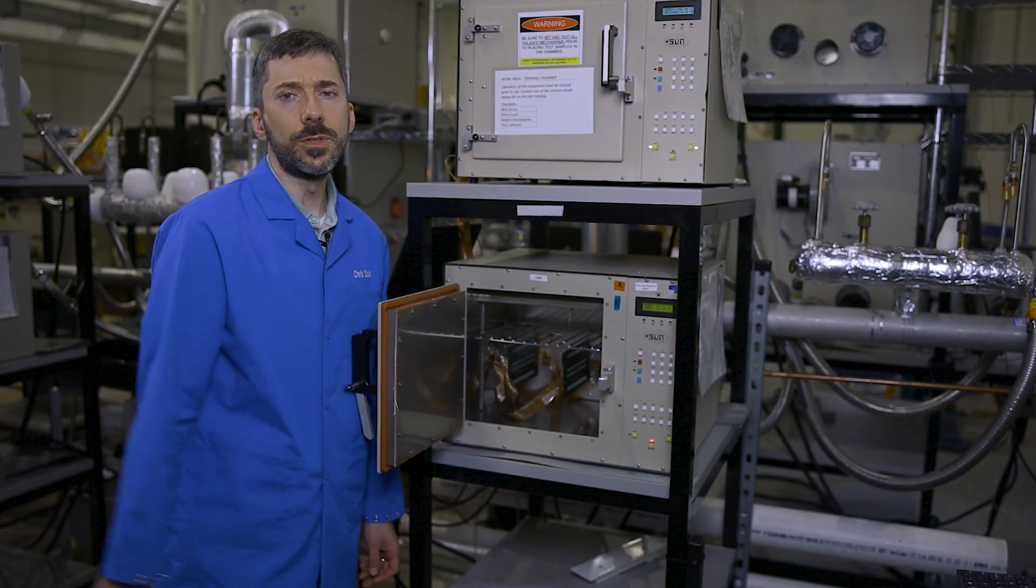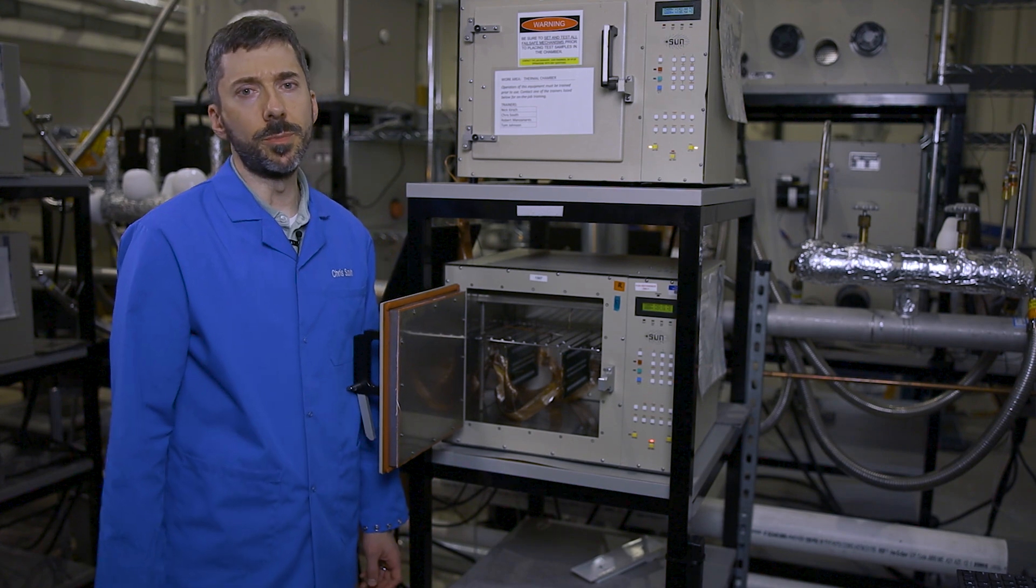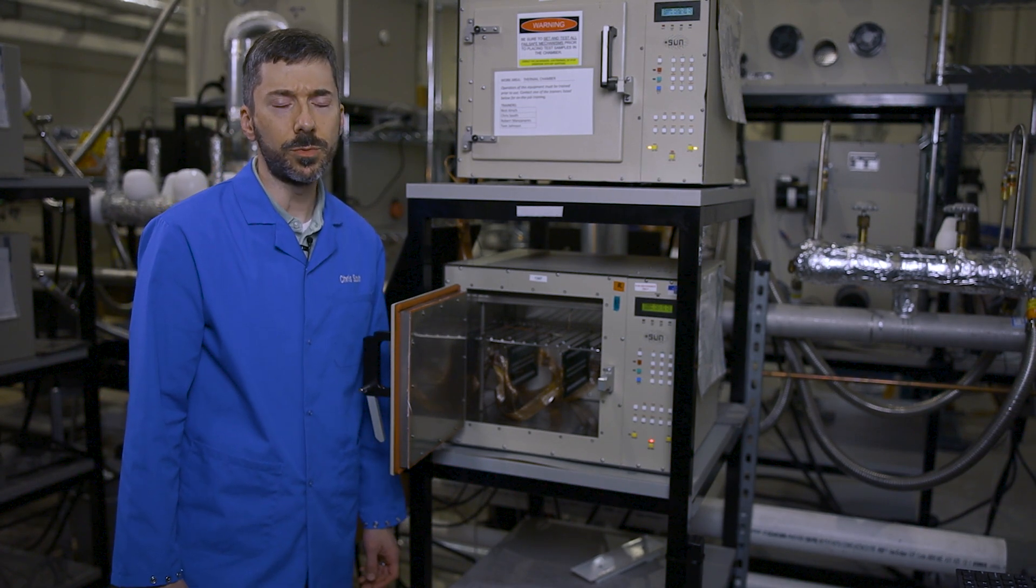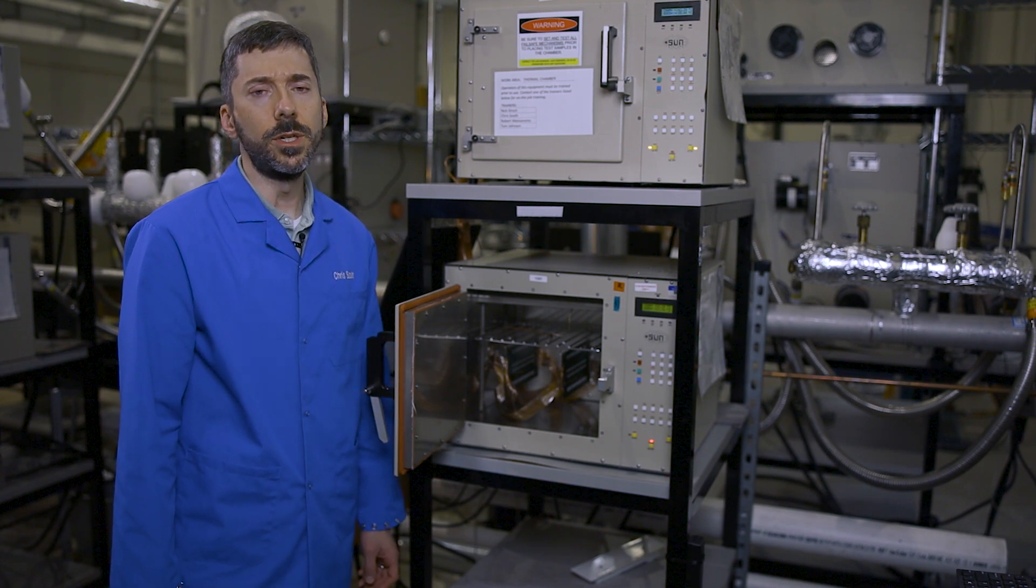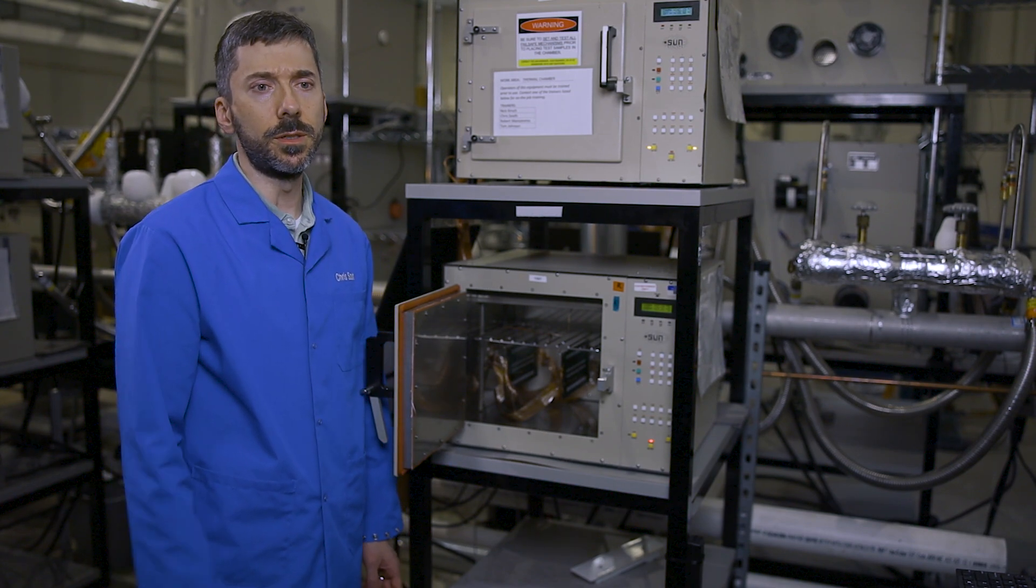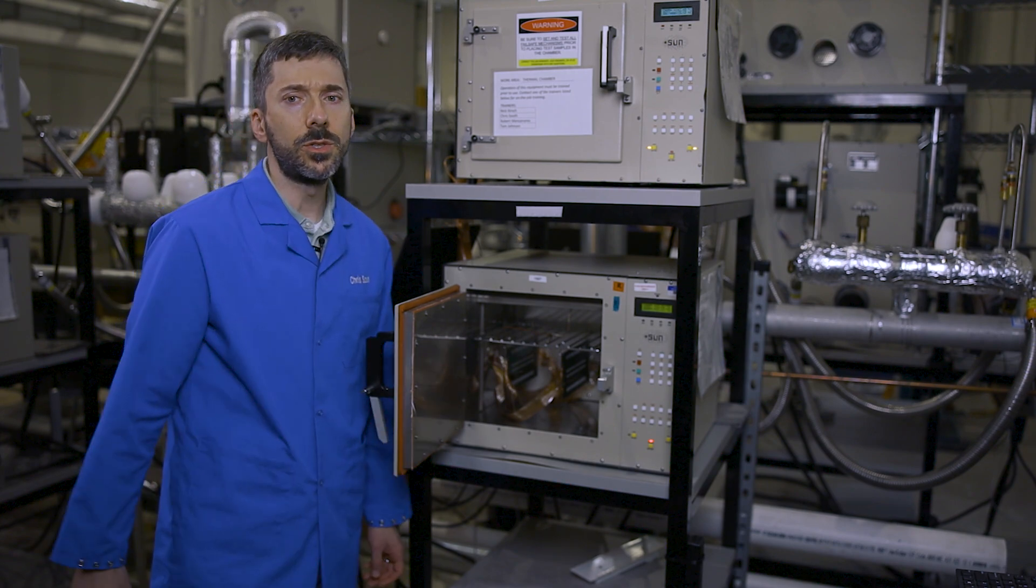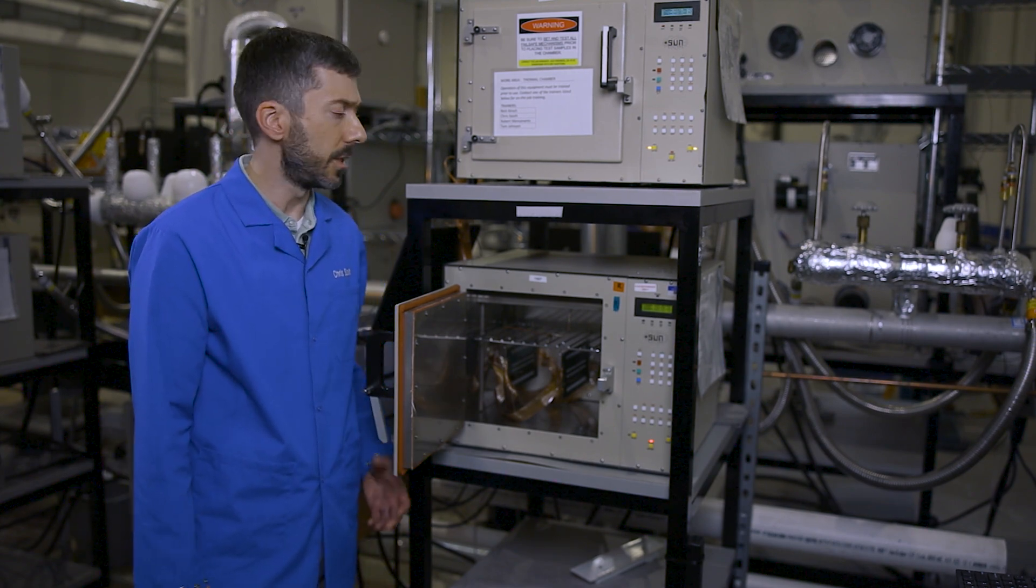Here's an example of a thermal cycling chamber being used to test ceramic chip components. The chamber can achieve temperatures less than minus 100 degrees C and up to just above 300 degrees C. Due to differences in the coefficients of thermal expansion among the board and the components, stresses are imparted on the assembly with each successive thermal cycle.